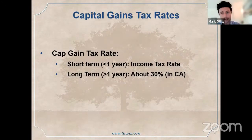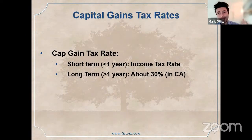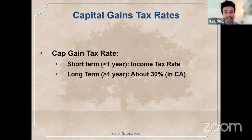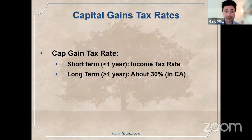If you hold an asset for more than a year, we have long-term capital gains tax rates, which are typically lower than income taxes. In California, though, it can still be around 30% or even over 30% — so you might lose 30% of your gain on a long-term capital gain. If it's short-term, you might lose 40 or 50% of your profit.